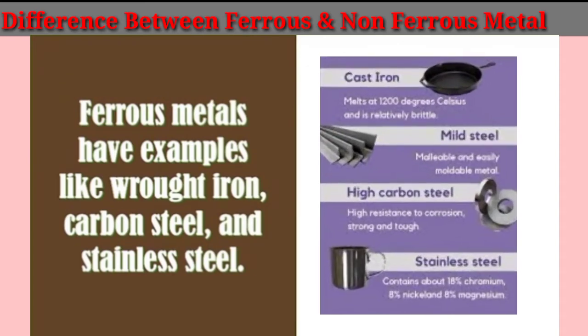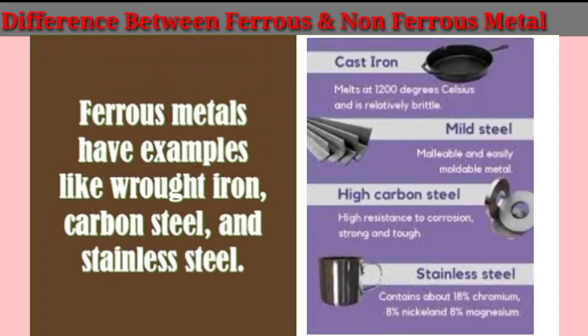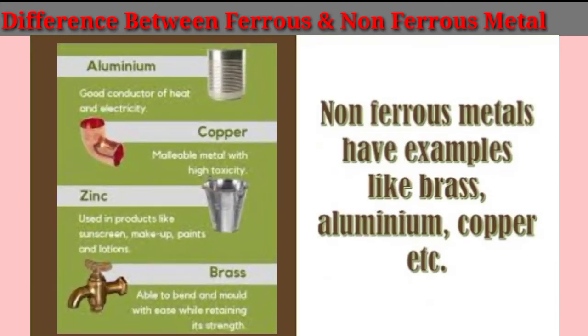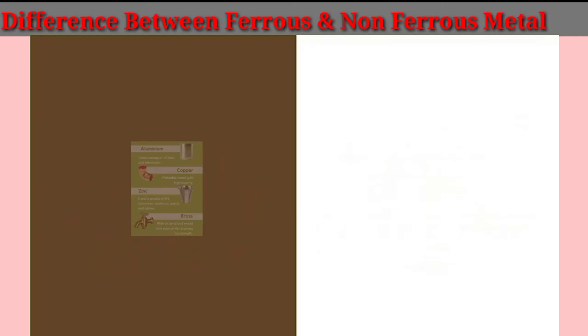Ferrous metals have examples like wrought iron, carbon steel, and stainless steel. Non-ferrous metals have examples like brass, aluminium, and copper.